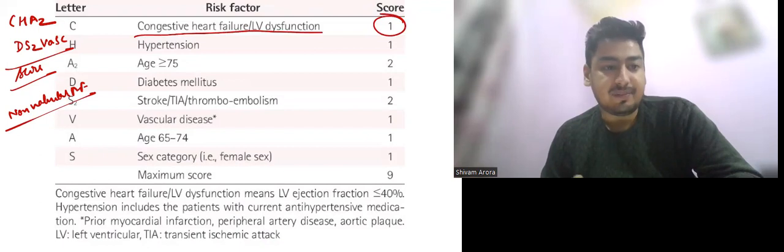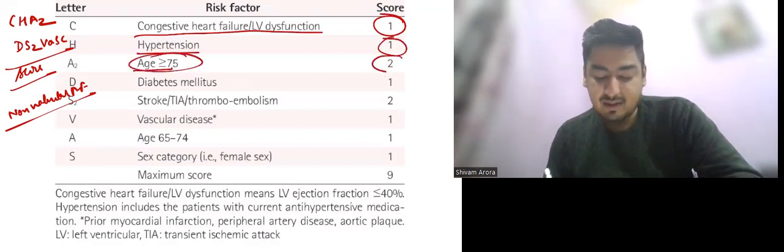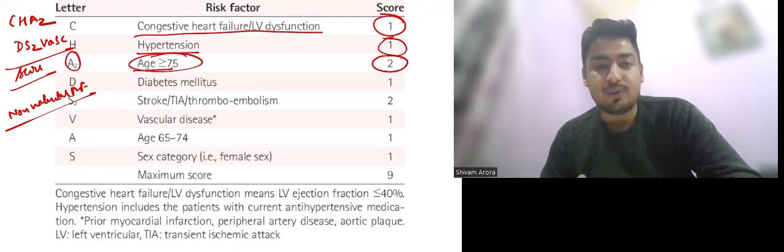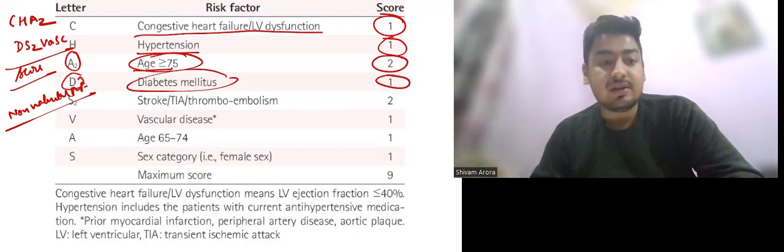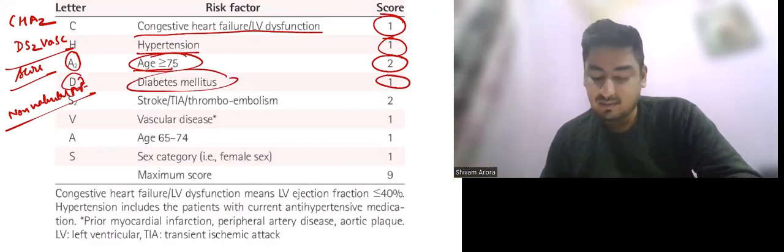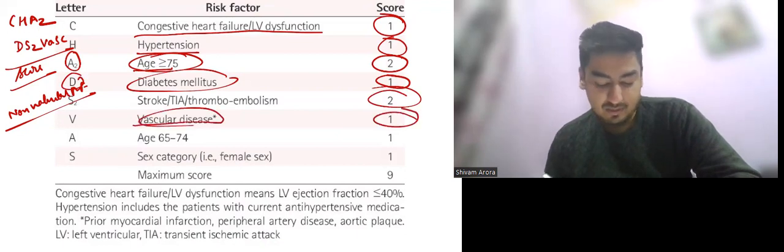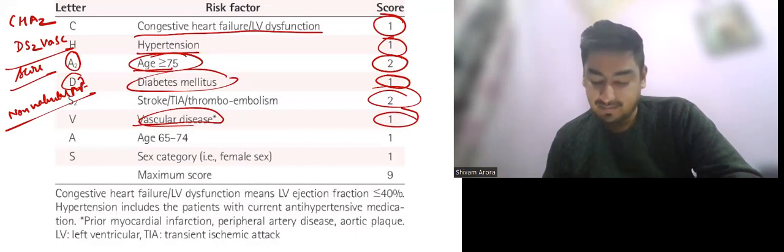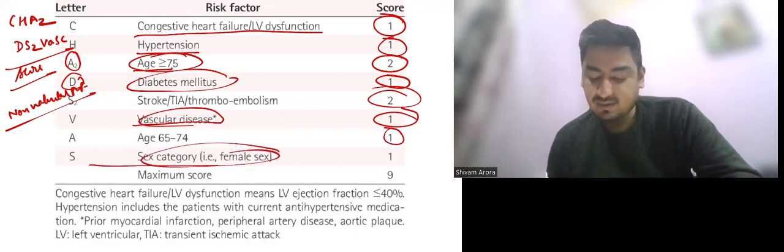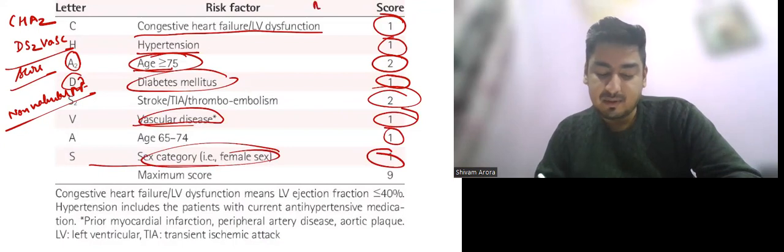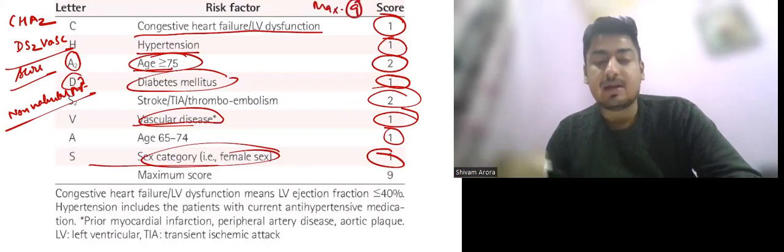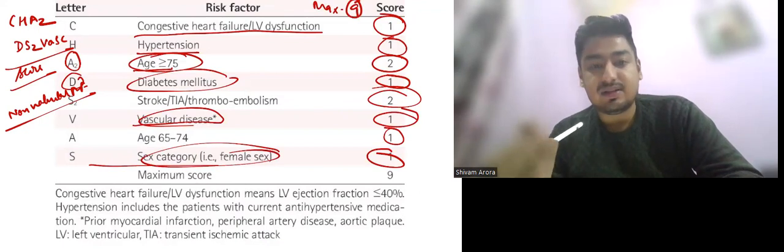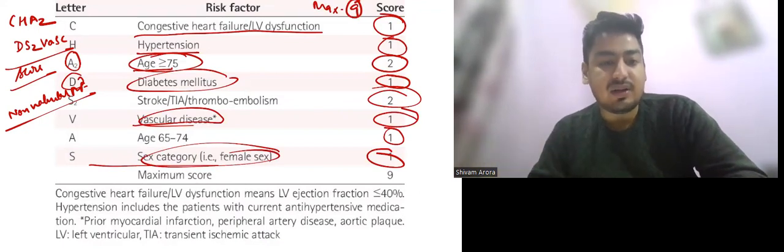C is for congestive heart failure or LV dysfunction, score of 1. H for hypertension, score of 1. Age more than 75, score of 2, that's why we have A2. D for diabetes, score of 1. S2 for stroke, TIA or thromboembolism, score of 2. V for vascular diseases, score of 1. A for age between 65 to 74, score of 1. S for sex, that is female, score of 1. Maximum score here is 9. Now you have to tell me in the comment section at which score we have to start anticoagulation.